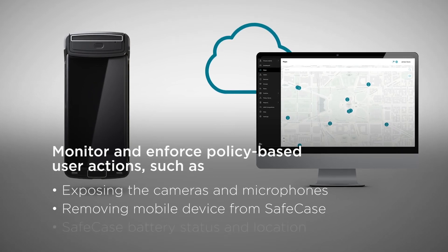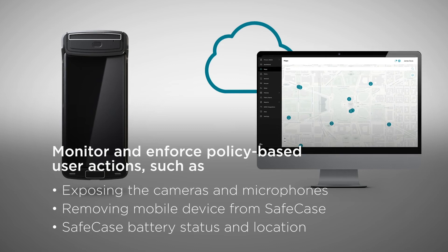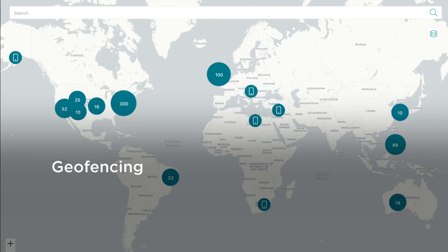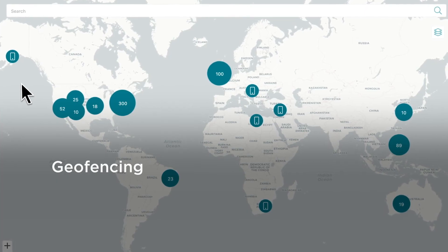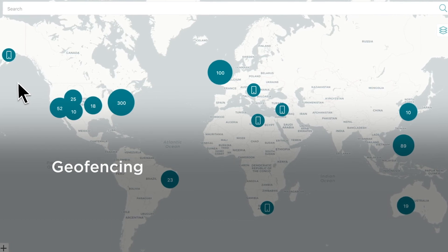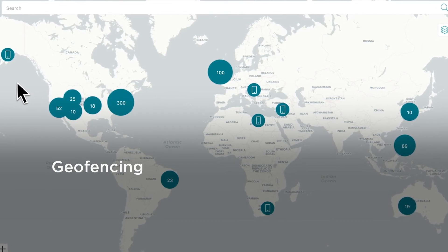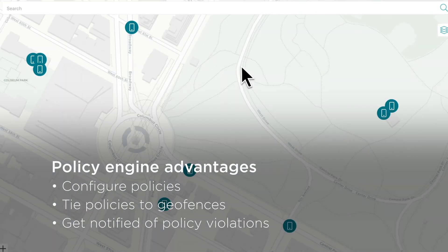Administrators can also monitor Safecase status, including battery level and location. Safecase provides secure communication of validated location from anywhere in the world, across any trusted or untrusted network, which allows system administrators to configure use and location-specific policy parameters, like geofencing, or for other more operational use cases.